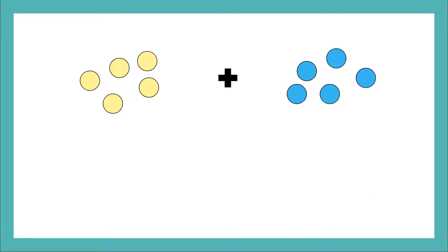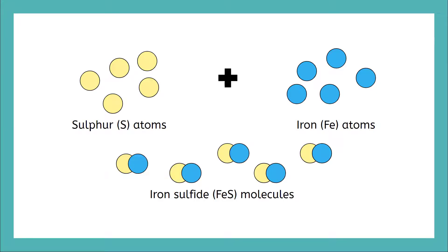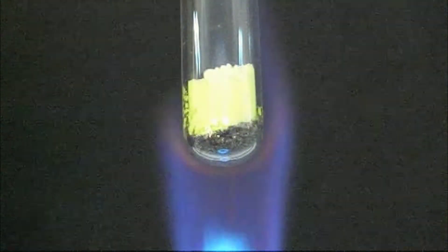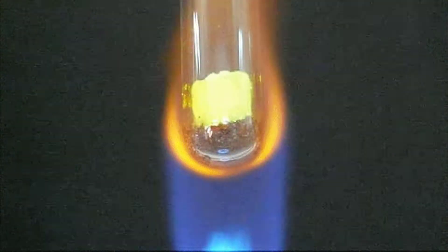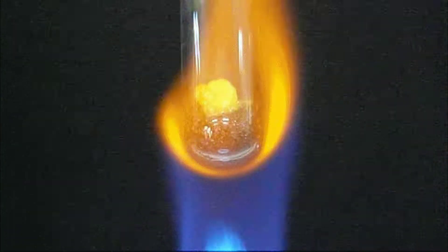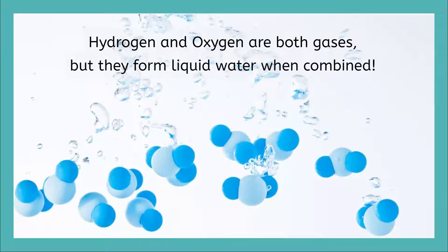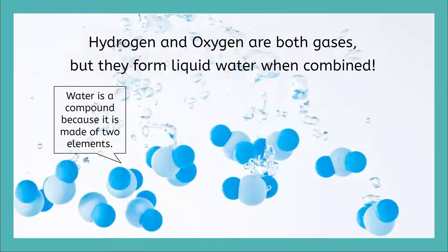Now let's take a closer look at what we've learned in this lesson so far. What do you think would happen if two or more elements reacted with one another, like sulfur and iron? If you said a compound is formed, then you are right. A compound is formed when two or more elements are chemically combined. It's important to note that the new compound will have different properties than the elements that make it up. For example, hydrogen and oxygen are both gases, but they form liquid water when they combine. Water is a compound because it is made up of two or more elements — oxygen and hydrogen.